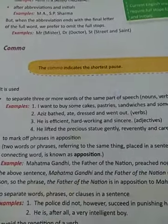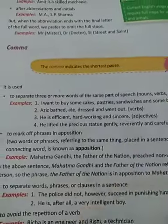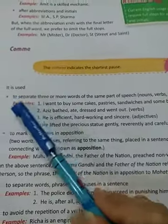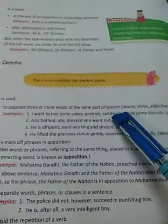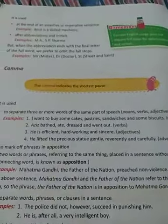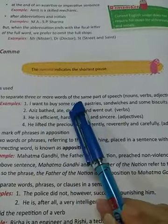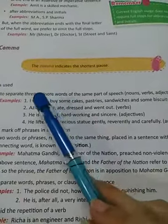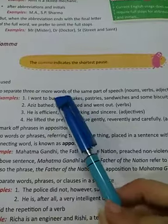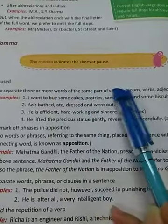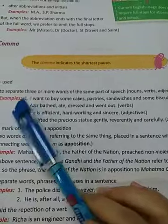Now we will see the usage of comma. The comma indicates the shortest pause. It is used to separate three or more words of the same part of speech — nouns, verbs, adjectives, adverbs. Whenever we want to separate words which have the same part of speech, we can use a comma to separate them.